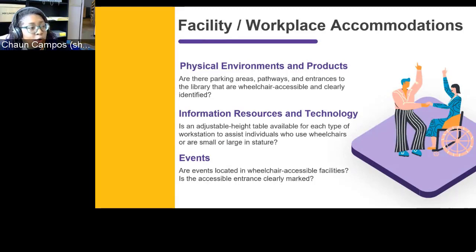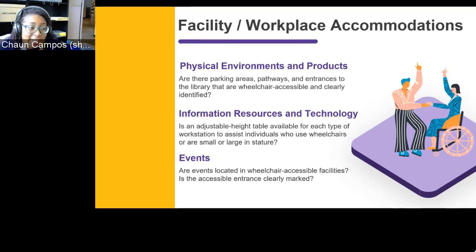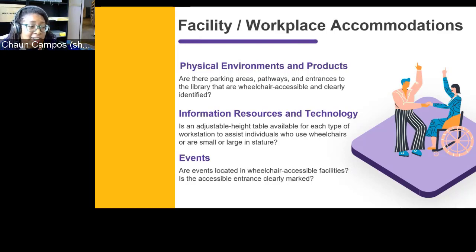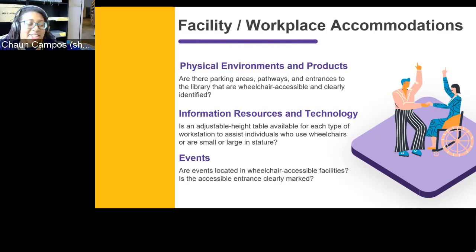Here are some questions to consider while evaluating your spaces for accessibility, from the Equal Access Universal Design of Libraries guide provided by the DO-IT (Disabilities, Opportunities, Internetworking, and Technology) organization. Providing equity to those with mobility impairment starts with breaking down barriers we take for granted — like getting into a building or working at an ergonomic workstation. Asking yourself these questions can guide you in making your space more inclusive.